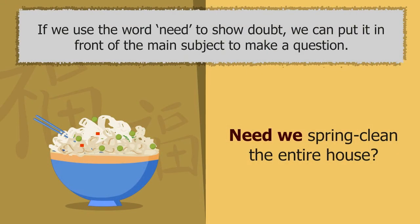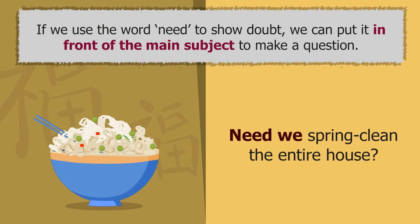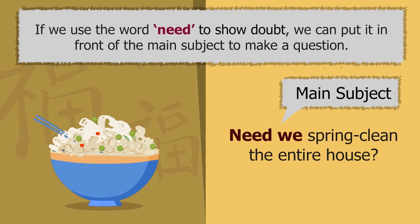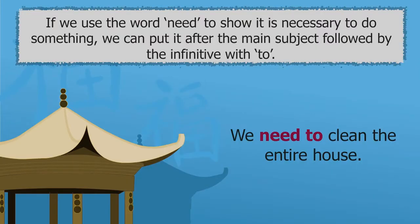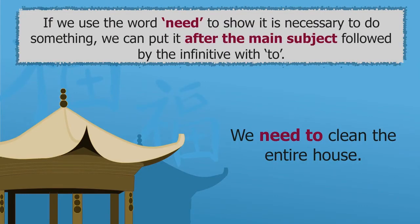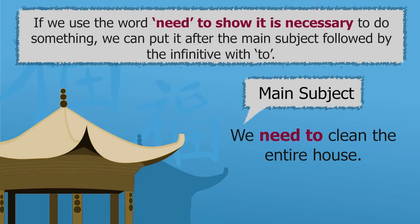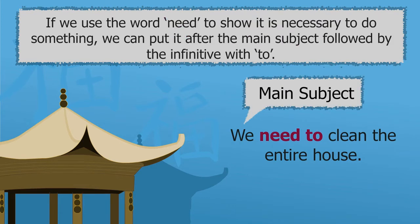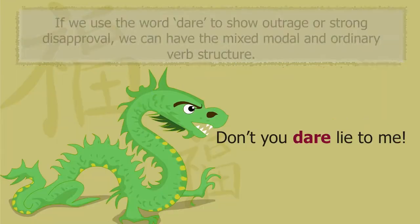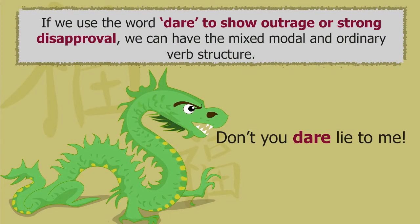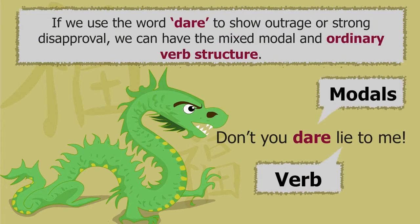Note that if we use the word need to show doubt, we can put it in front of the main subject to make a question. If we use the word need to show it is necessary to do something, we can put it after the main subject, followed by the infinitive with to. If we use the word dare to show outrage or strong disapproval, we can have the mixed modal and ordinary verb structure.